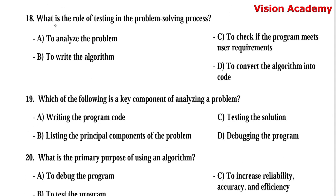Question number 18: What is the role of testing in the problem solving process? Option A, to analyze the problem. Option B, to write the algorithm. Option C, to check if the program meets user requirements. Option D, to convert the algorithm into code. Here, option C, to check if the program meets user requirements, is the right answer.